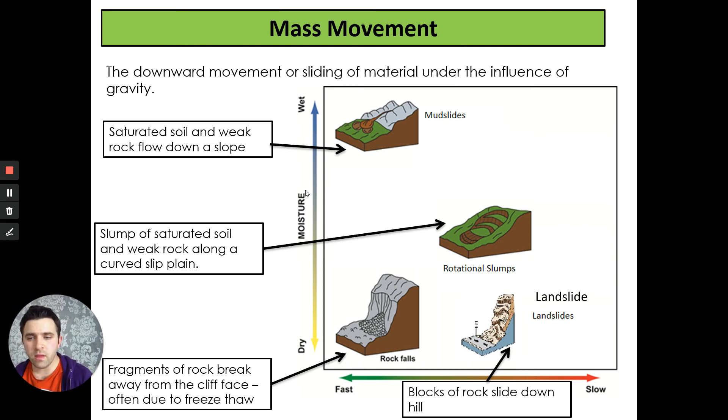Mass movement is the downward motion or sliding of material under the influence of gravity. There are a couple of types: mudslides, rotational slumps, rockfalls and landslides. They can happen fast or slow, when the soil is dry or wet. Let's talk about rock slides. A large amount of rock slides down a cliff in a fairly straight slip plane. As you can see in these diagrams, it's quite straight. Our rocks are falling down straight, not a curve or angle. These blocks of rock fall down and keep contact with the cliff. As they fall, they break away and stay at the bottom in this large collected bit, either on the shore or in the sea as a pile of rocks and rubble.